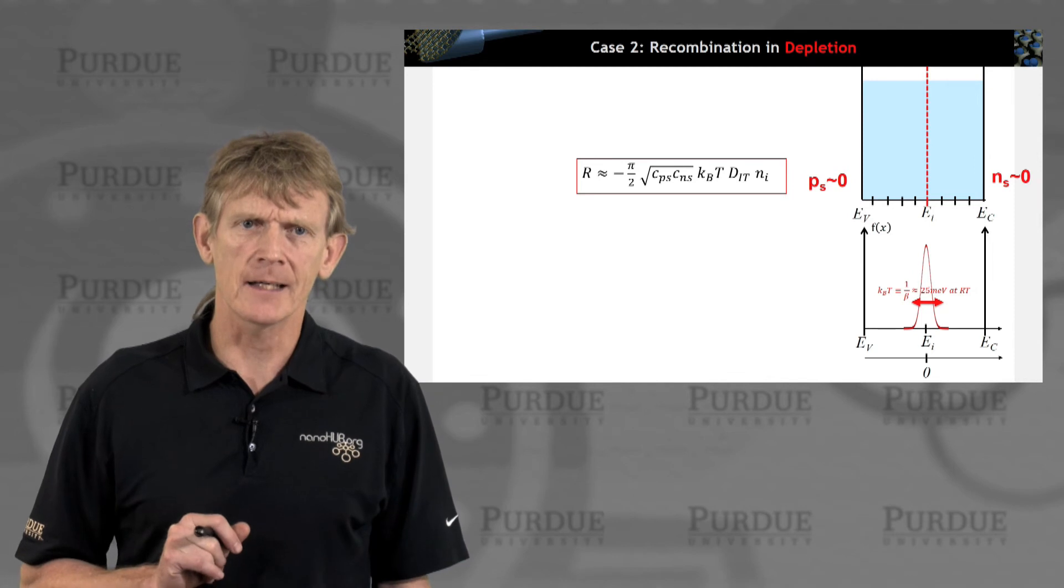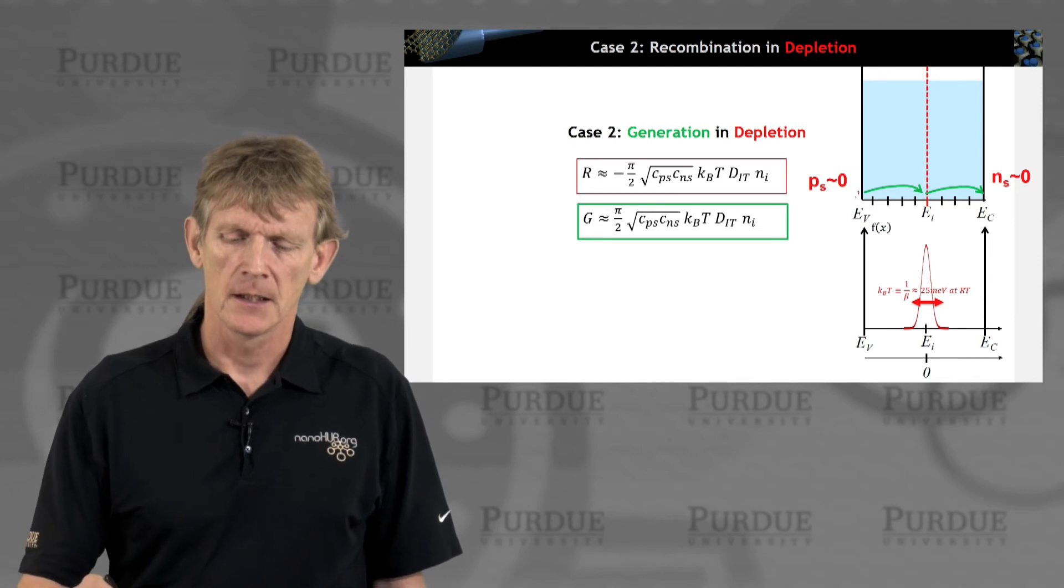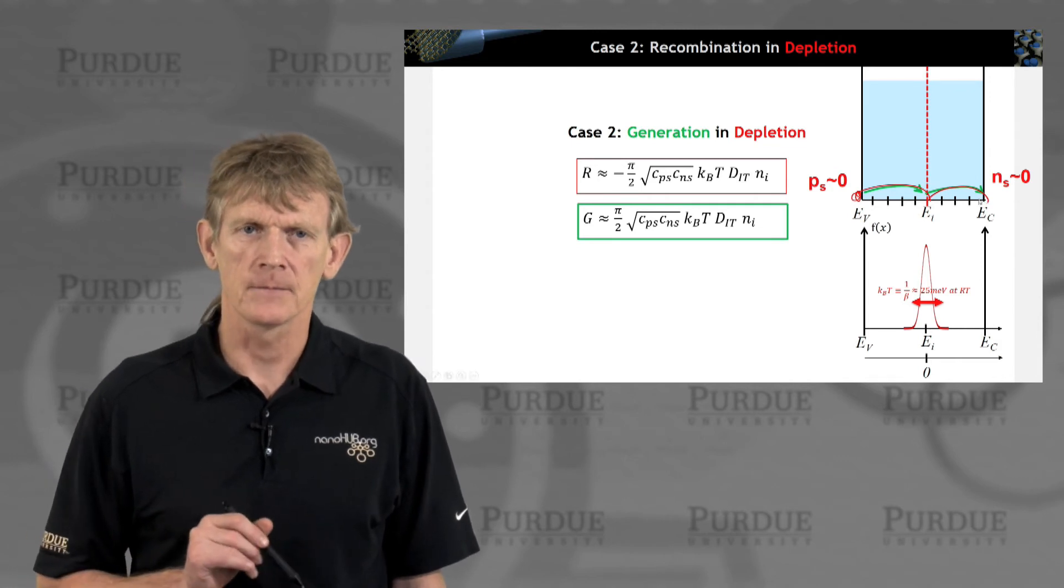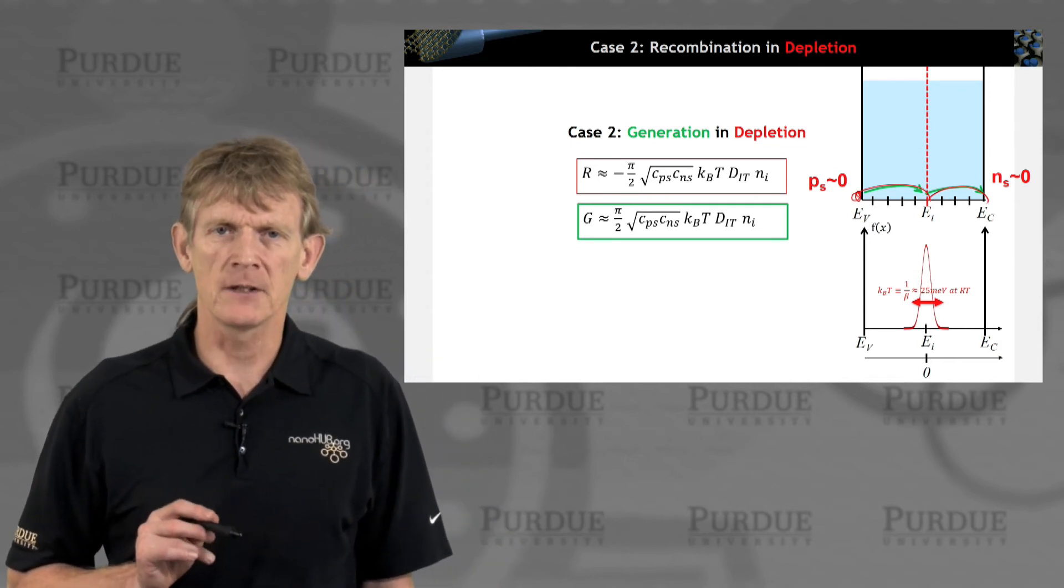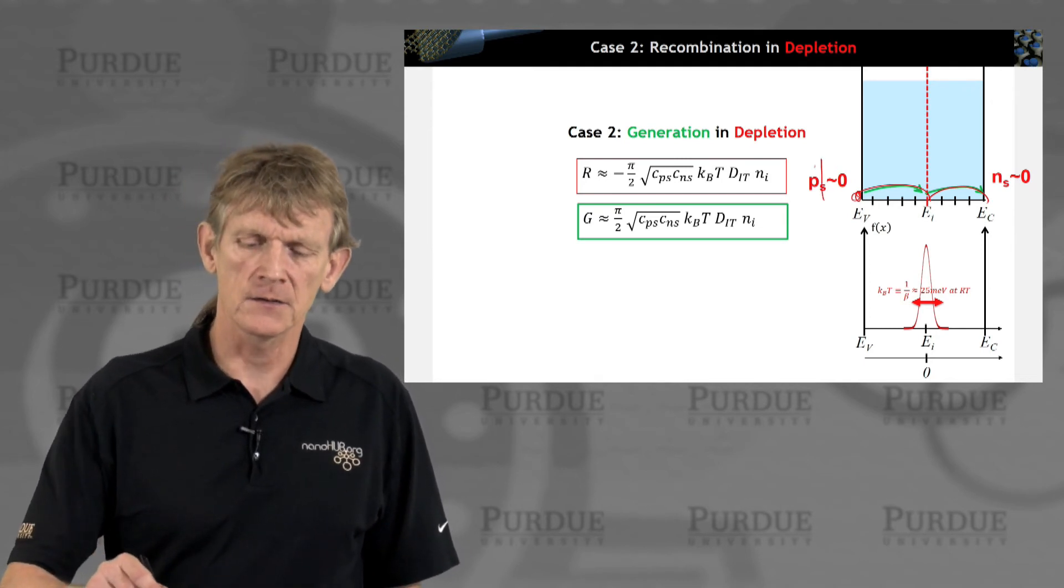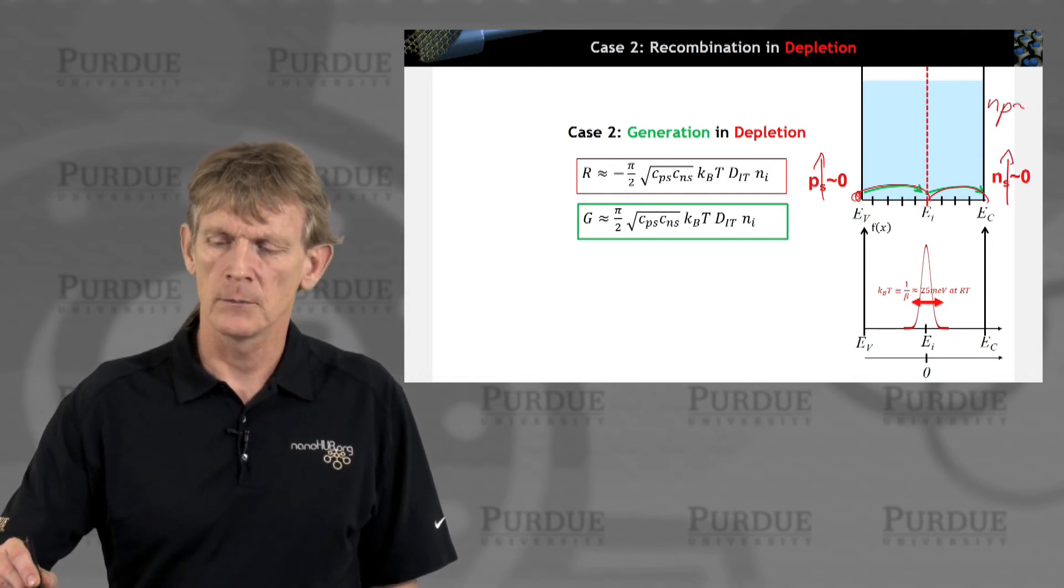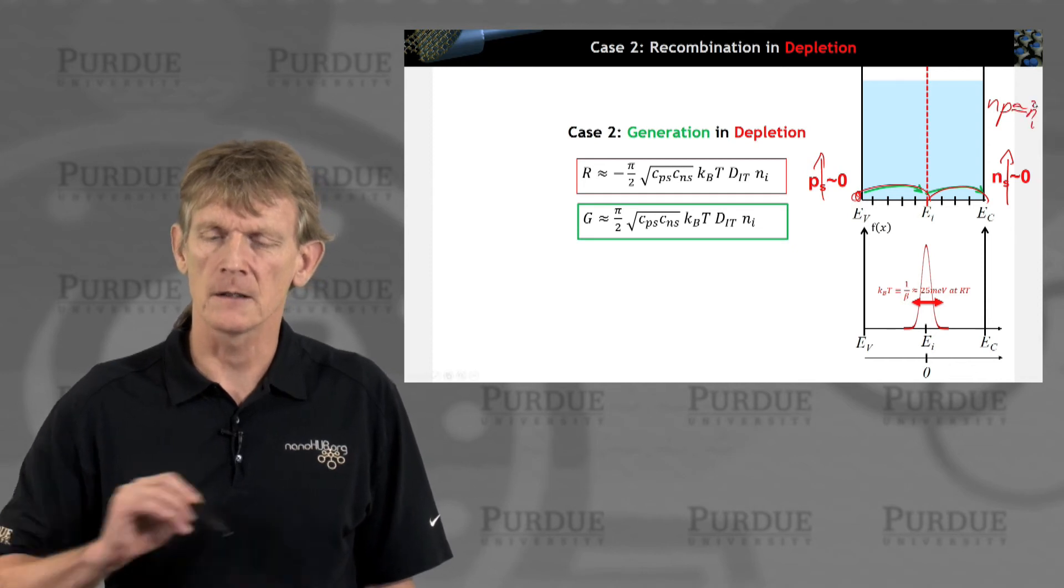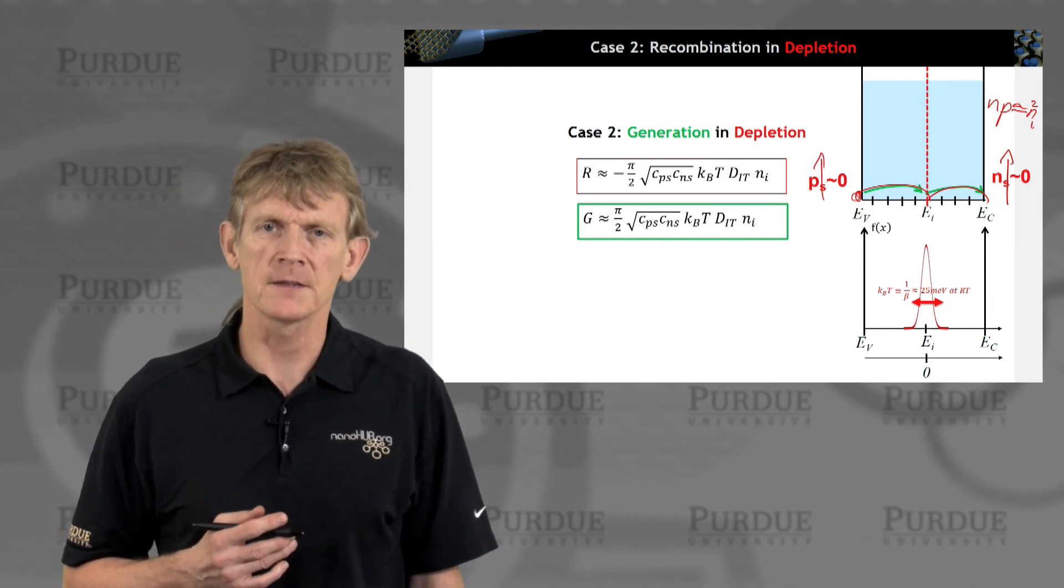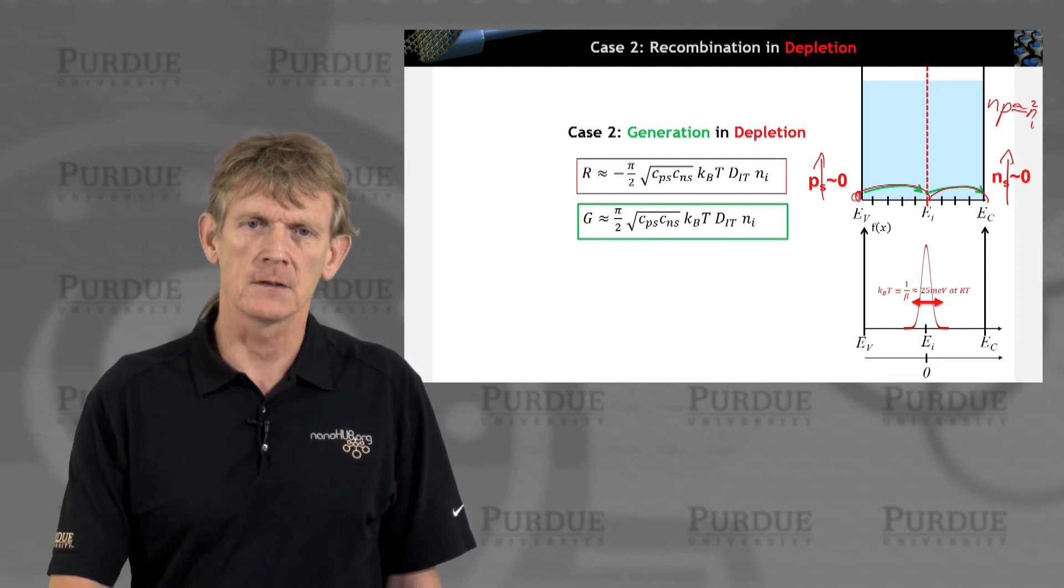This term is negative. What does that mean? Well, it means we're really generating carriers. We have holes and electrons hop up into the trap state and hop into the conduction band. This thermally activated process restores equilibrium towards increasing this number of p and n that n times p becomes ni squared. This is an equilibrium restoring process. We generate carriers through this trap-assisted process.